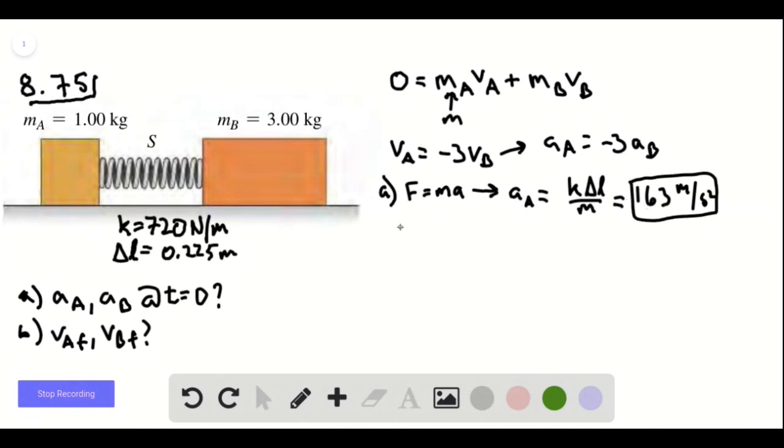Now, immediately from this, we know that the acceleration on b, because it has three times the mass but the same force is acting on it, is going to be 54 meters per second squared. So far, so good.